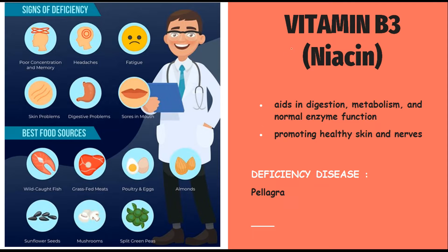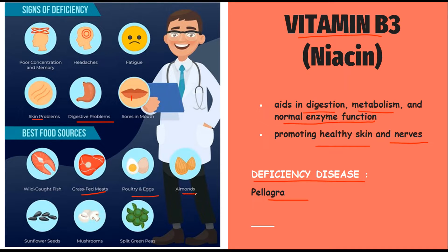Next we have vitamin B3, niacin. It takes part in digestion, improves metabolism, and helps in normal enzyme function. It also promotes healthy skin and nerves. The deficiency disease caused due to vitamin B3 is pellagra. Signs of deficiency are poor concentration and memory, headache, fatigue, sores in the mouth, digestive problems, and skin problems. Best food sources include grass-fed meats, poultry, eggs, almonds, split green peas, mushrooms, and sunflower seeds.